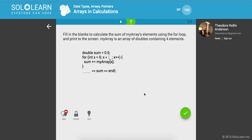Fill in the blanks to calculate the sum of my array's elements using the for loop and print to the screen. My array is an array of doubles containing four elements. So that means we're going to stop at three. And what we're going to want to do is aggregate onto our sum. Finally, let's use the console output to print out the sum. So let's try this out.